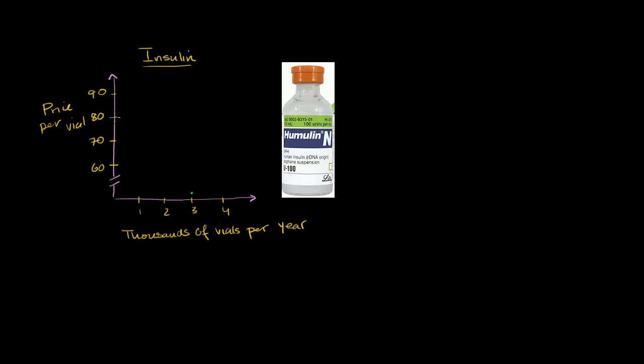If the price is $80 a vial, they'll still take 3,000 vials a year. So within reason, within a reasonable price range, you have no change in quantity demanded. So in this case, at least in a reasonable price range, the demand curve for insulin is vertical.